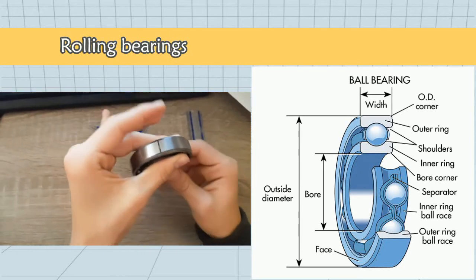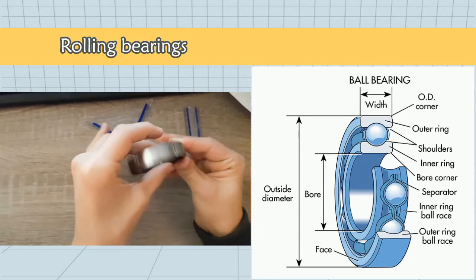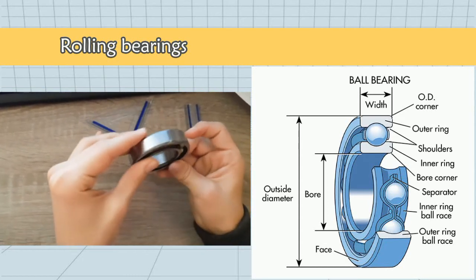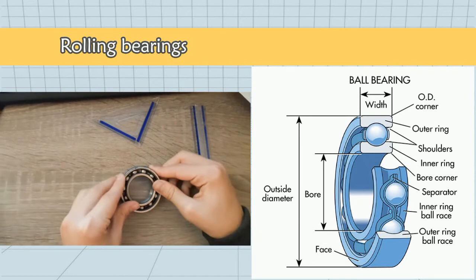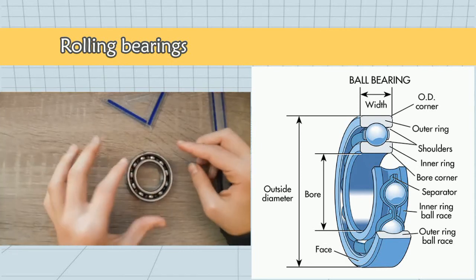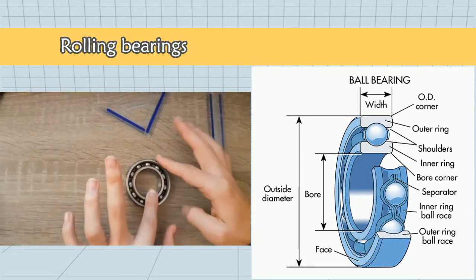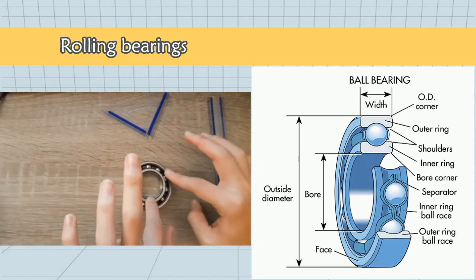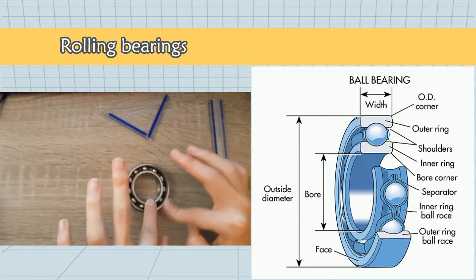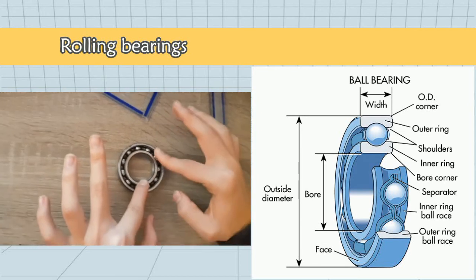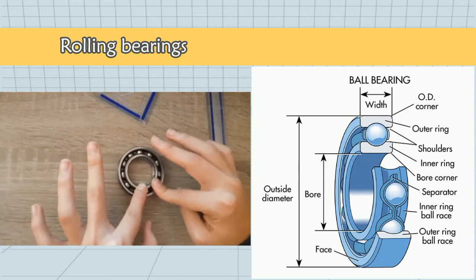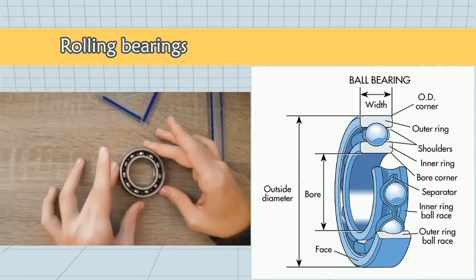The wheel set rotates and is supported by bearings that are called axle box bearings. Roller bearings carry a load by placing rolling elements such as balls or rollers between two bearing rings called races. The relative motion of the races causes the rolling elements to roll with very little rolling resistance and with little sliding.